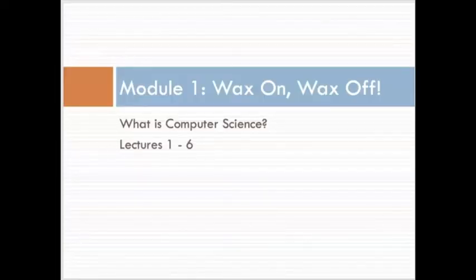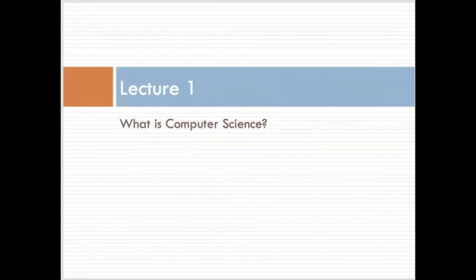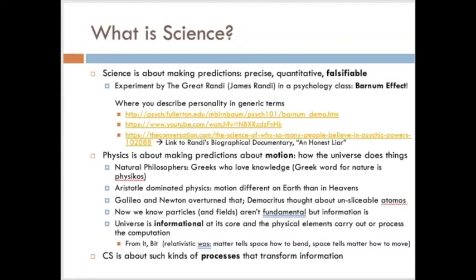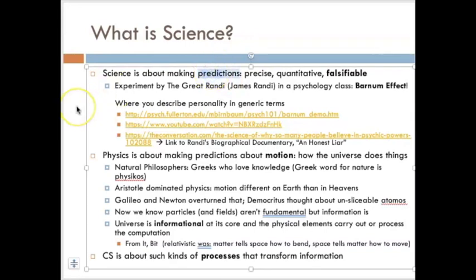There's a series of things that I want to talk about to lay the groundwork for computer science and what exactly that is and what science itself is. What is science? It turns out that the most central and consistent definition of science that we might have is that science is about making predictions.